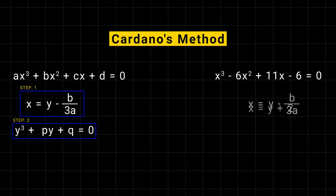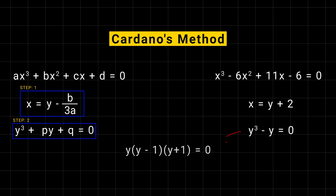Substitute x equal to y plus 2 to get y cubed minus y equal to 0. Solve the depressed cubic equation. In this case, it's straightforward: y cubed minus y equal to 0 factors as y times y minus 1 times y plus 1 equal to 0.